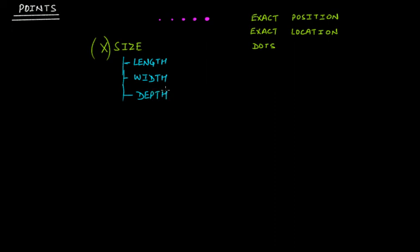And they don't have depth. They don't have all these three things. They simply represent an exact dot at some exact position or exact location, and they don't have size — that is, they don't have length, they don't have width, and they don't have depth.